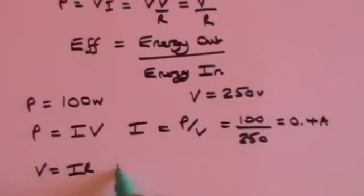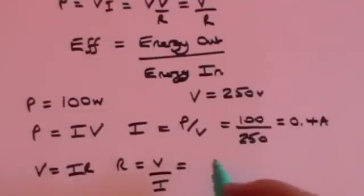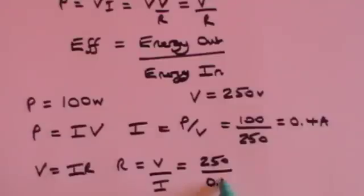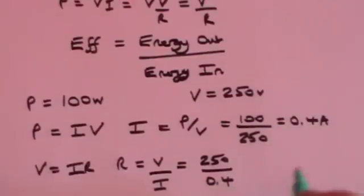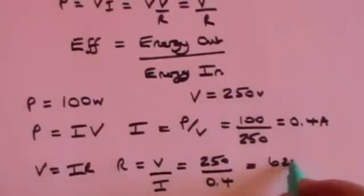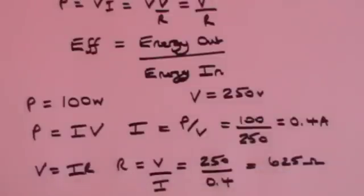V equals IR. So R is V divided by I, which is going to be 250, that's the voltage, divided by 0.4, and that comes to 625 ohms.